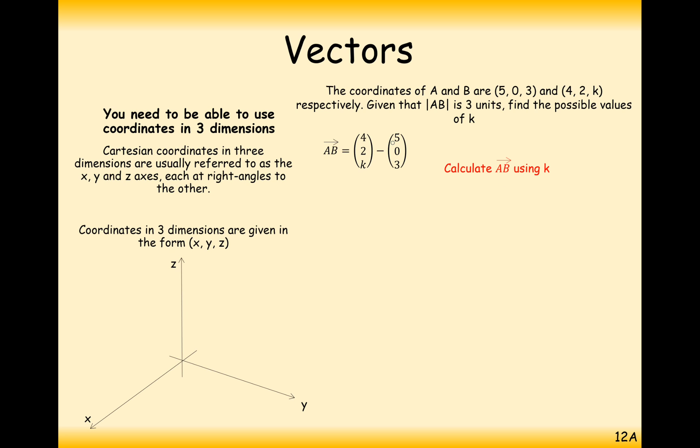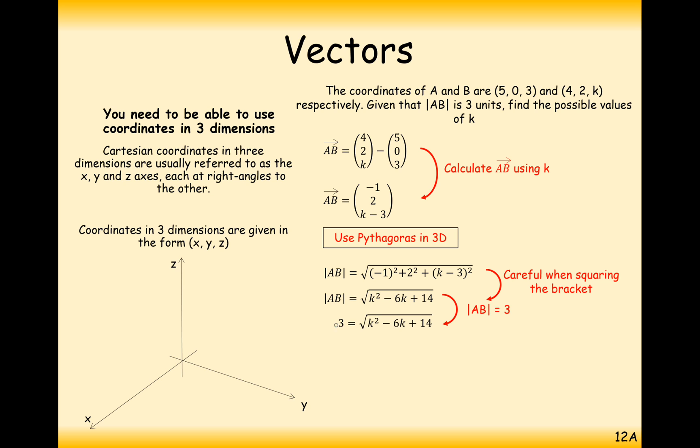So what we're going to do is use the direction vector from A to B. We work that out by doing B take away A. In this case, we're going to get minus 1, 2, K minus 3. Then we're going to use 3D Pythagoras and set this equal to 3 because the distance is 3 units. We'll expand the brackets and get K squared minus 6K plus 14. Set the modulus of this equal to 3.